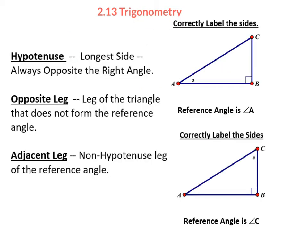To organize ourselves using trigonometry, we have to label sides with certain names and relationships. The first is the hypotenuse. In a right triangle, the hypotenuse is always opposite the right angle. It is also always going to be the longest side, so the hypotenuse is a fairly easy thing to label.